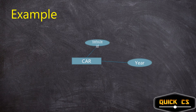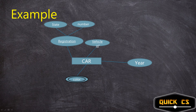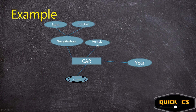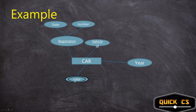Vehicle ID is a unique attribute — every vehicle will have a unique Vehicle ID — so it is underlined as a key attribute. Registration is also a key attribute, but since it is a composite attribute made up of two components — the state and the number — it is divided further with two sub-attributes connected to it. For multivalued attributes, such as a car having more than one color, we represent them with a double oval — an oval enclosed within another oval.